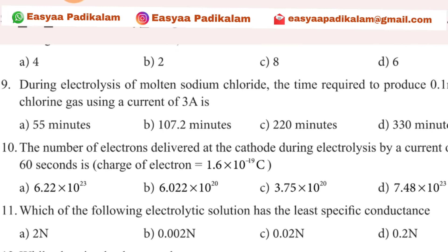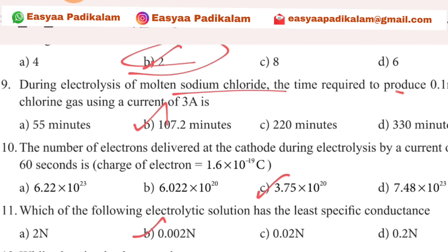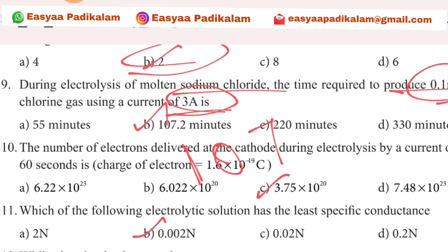Ninth question: during electrolysis of molten sodium chloride, the time required to produce 0.1 mol. You have a number of 3, so you need 0.1. We have plus 3, which is 3 digits, so we will choose 3. Then we have 0.2 digits, so we can choose 0.2.